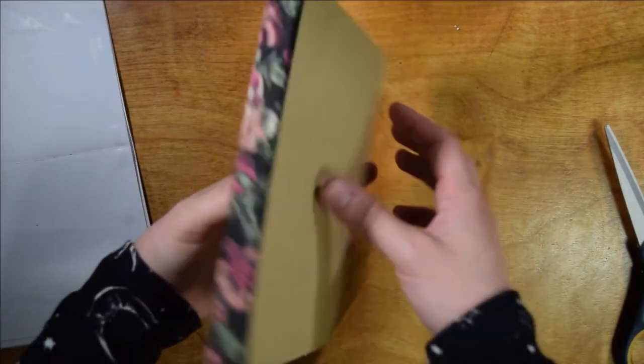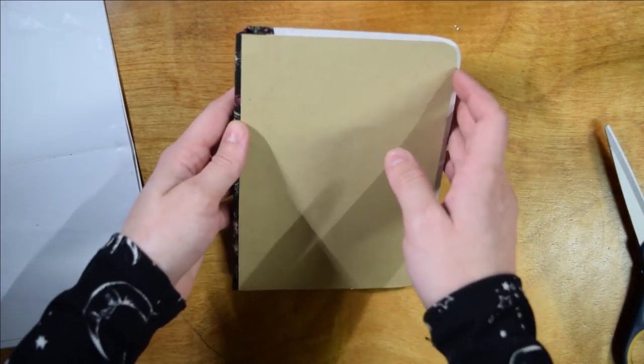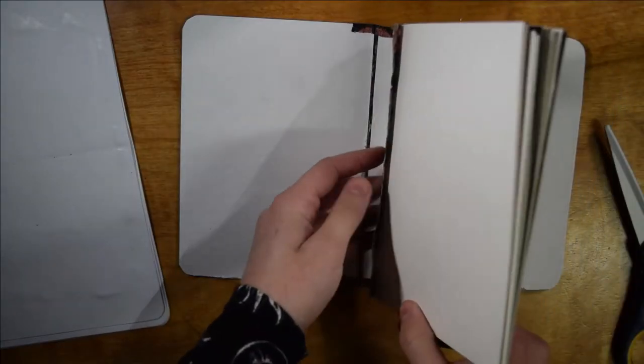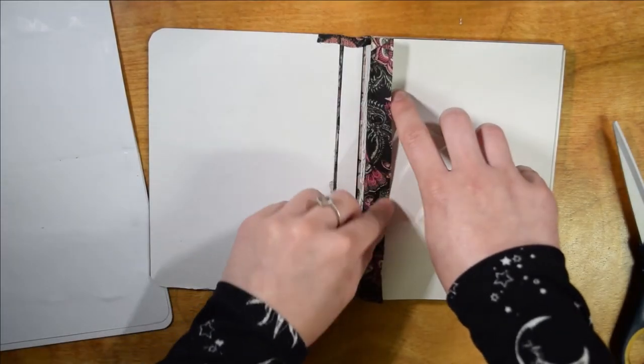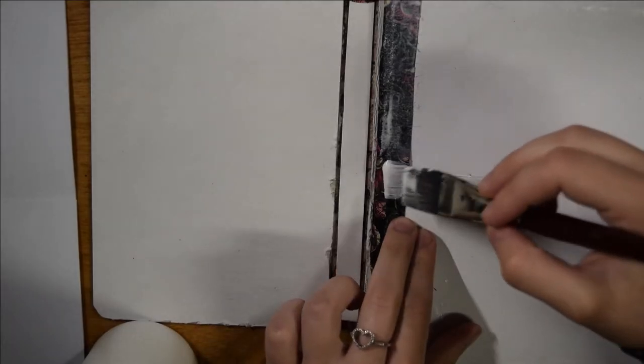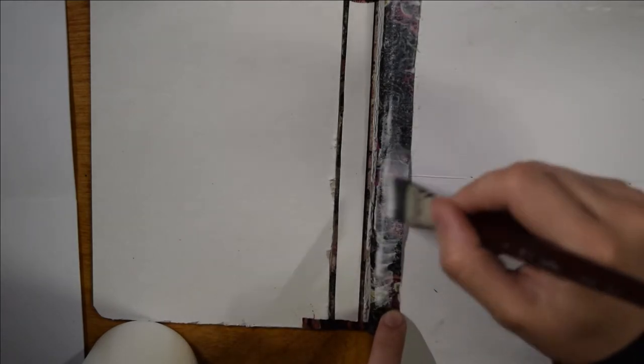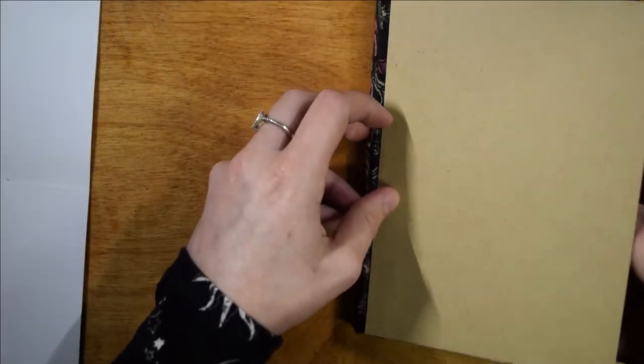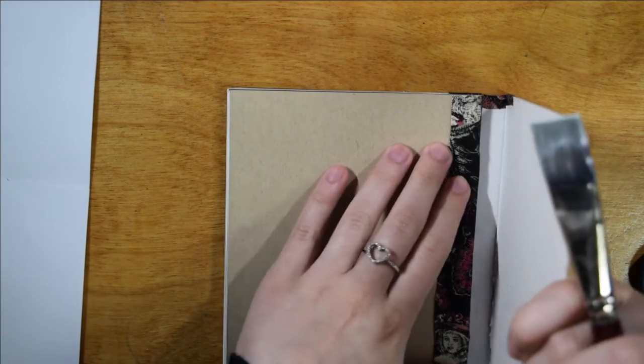I also didn't record gluing the cloth onto my signatures, but I did that so that I could take that cloth and glue it against the back of my cover. And this is basically what is holding my signatures to the cover of my book. And I hope that it's sturdy. I hope that glue holds because that is all really that is holding it.